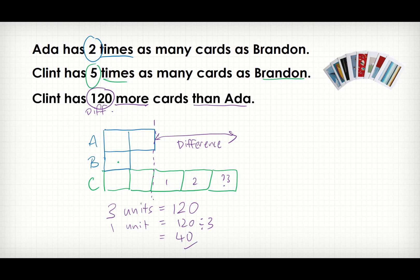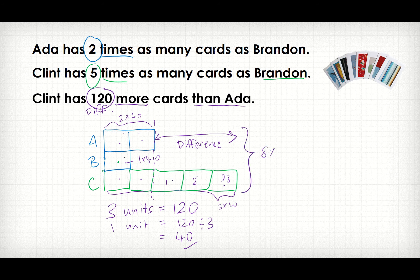So how many cards does Clint have? Five times 40. How many cards does Brandon have? Brandon has one unit, so one times 40. How many cards does Ada have? Two units — two times 40. How many cards do they have altogether? Eight units — eight times 40.